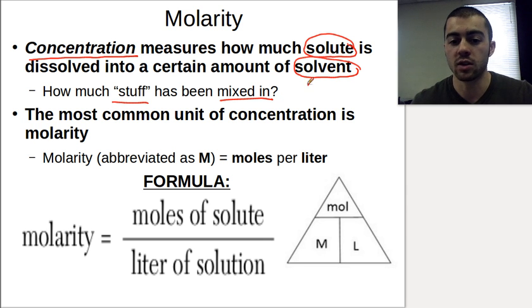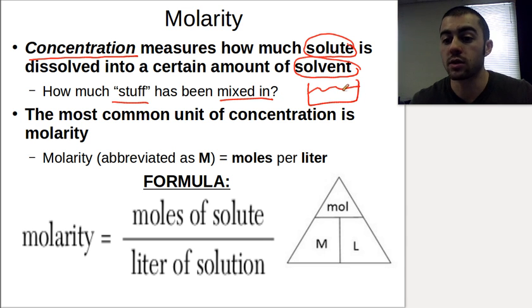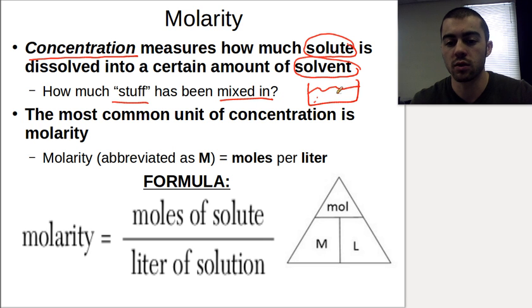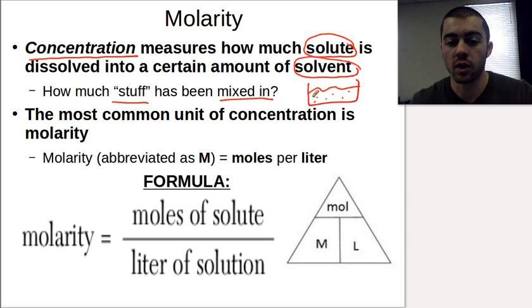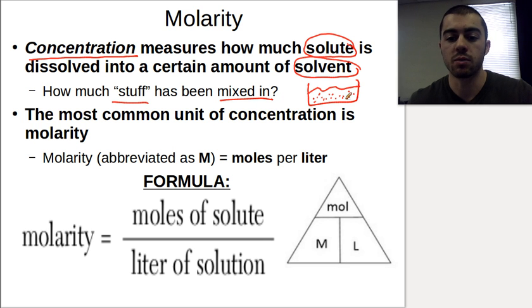If we take the salt water example, if we have a salt water solution, we want to know how concentrated it is — how dense are the solute particles compared to how much solvent we have. If we have a few particles dispersed in the solvent, we'd have a low concentration solution. Whereas if we put a bunch more particles in, we'd have a much higher concentration solution.